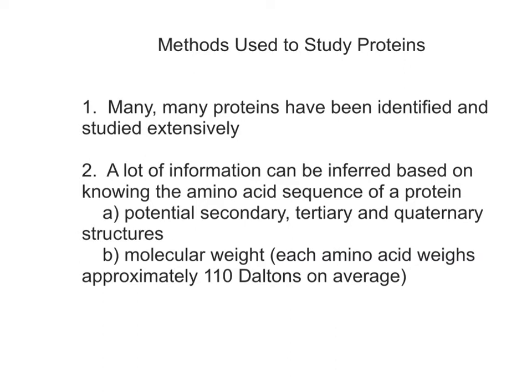That helps us because if we're looking for a particular protein and we can identify which proteins are available, we might be able to say, because that molecular weight is the same as the protein that I'm looking for, that might be the protein that I'm interested in looking at. Every amino acid has a particular molecular weight. If you look at the overall 20 amino acids, the average molecular weight is 110 Daltons for each amino acid. So let's say you have a peptide that's 10 amino acids long — 10 times 110 would be 1100 Daltons. Very simple.